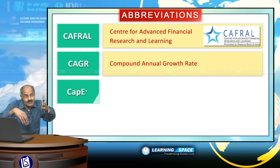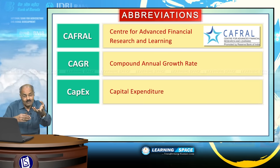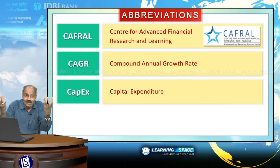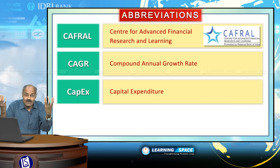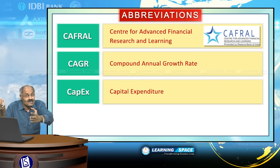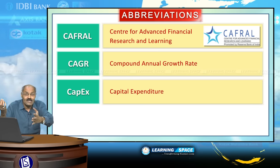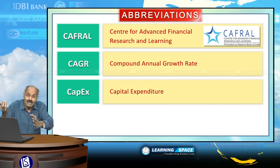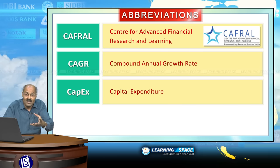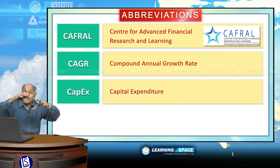That is why it is called Compound Annual Growth Rate. CAPEX is Capital Expenditure. What is the difference between capital expenditure and revenue expenditure? Capital expenditure is basically for creation of assets. If you purchase some land or a house, that is capital expenditure. If you are going to a five-star hotel and eating something by spending one thousand rupees, that is revenue expenditure.